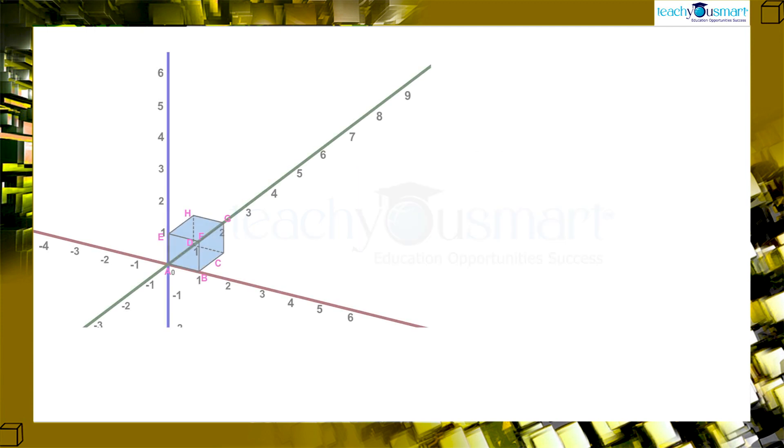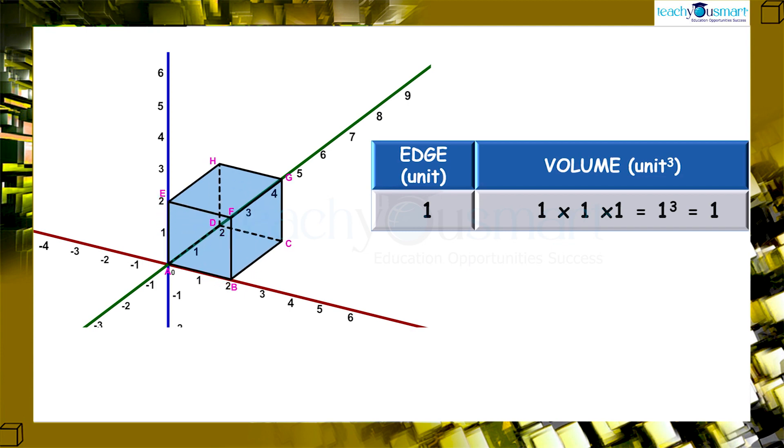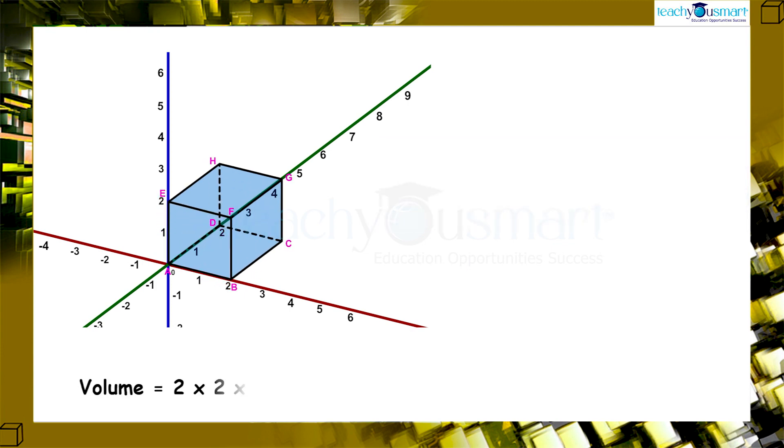If the length of its side is a equals 1 unit, what will be the volume? Yes, the volume is 1 multiplied by 1 multiplied by 1 equals 1 raised to 3. If the length a equals 2 unit, then the volume is 2 multiplied by 2 multiplied by 2 equals 2 raised to 3.